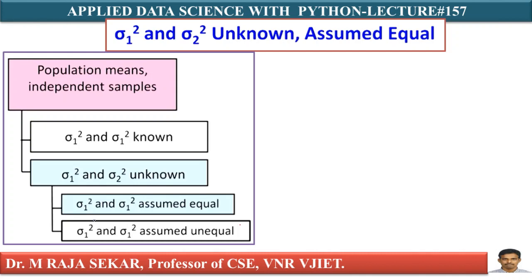Why are we assuming Sigma1 square and Sigma2 square are equal? Comparison is meaningful when the variance of two groups are equal. For example, comparing the performance of third year versus fourth year students may not be sensible, but we can compare two different sections of third year students. That's why the variance has to be equal for comparison to be meaningful.